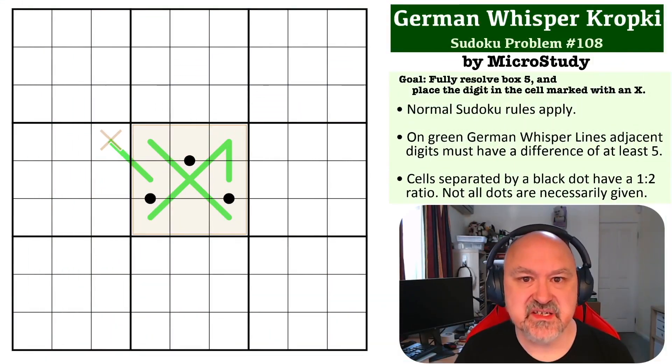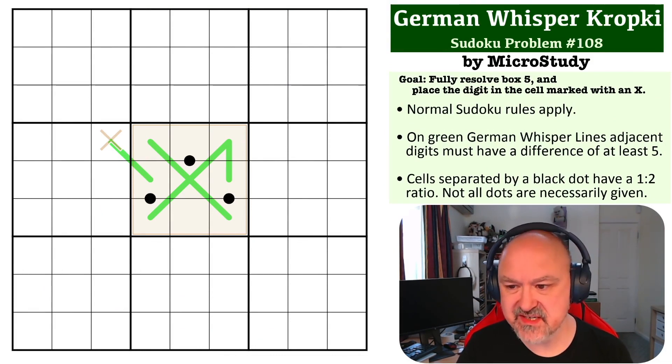Hey everyone, this is Bremster and this is number 108 in the Sudoku problem series. This is a Kropke German Whisper problem by MicroStudy.